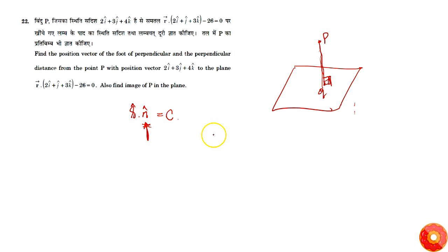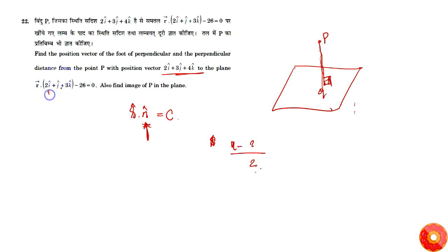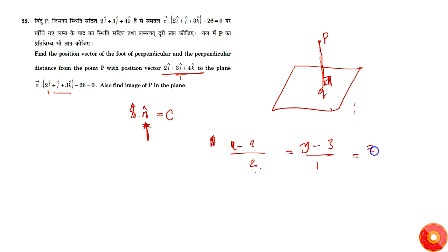Any point on the line passing through P and perpendicular to the plane can be written parametrically. Since point P is given as 2î + 3ĵ + 4k̂, the symmetric line equation is: (x − 2)/2 = (y − 3)/1 = (z − 4)/3, where 2, 1, 3 are the direction ratios from n̄. We set this equal to parameter t.